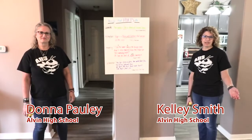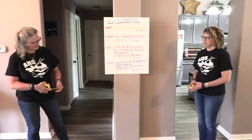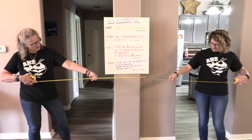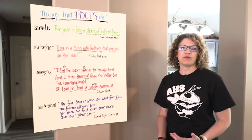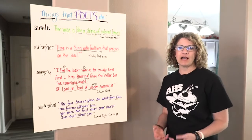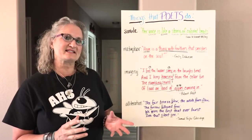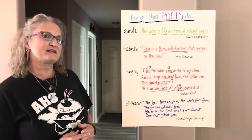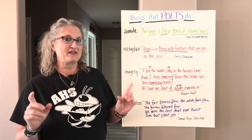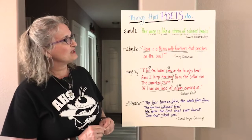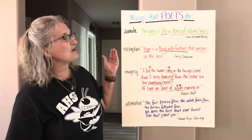Hi, my name is Donna Paulie and I'm Kelly Smith. We are English teachers from Alvin High School in Alvin, Texas. April is National Poetry Month, and one of the things we know is we can become better writers by reading our favorite authors and poets. We decided to talk about some basic devices that poets use. One is a simile — a simile is when we make a comparison between two unlike things using 'like,' 'as,' or 'than.'